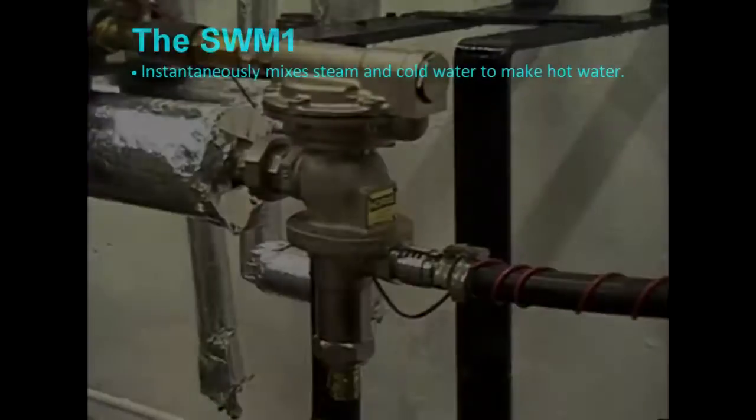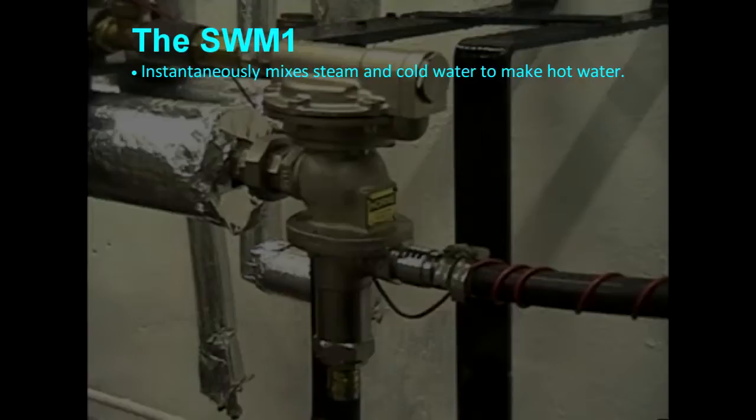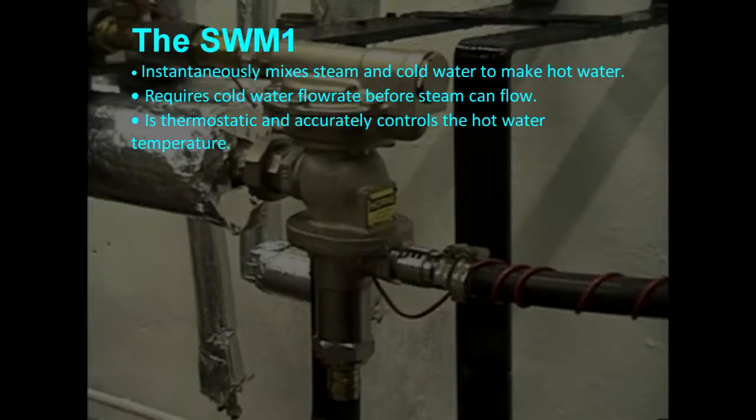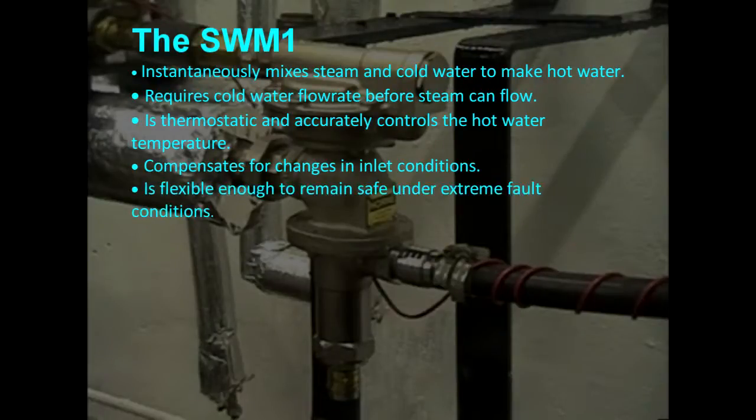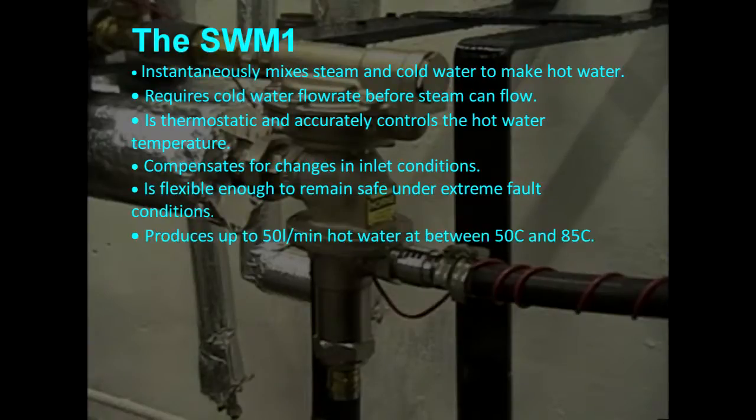The SWM1 instantaneously mixes steam and cold water to make hot water. It requires cold water flow rate before steam can flow, is thermostatic and accurately controls the hot water temperature, compensates for changes in inlet conditions, is flexible enough to remain safe under extreme fault conditions, and produces up to 50 liters per minute of hot water at between 50 and 85 degrees C.